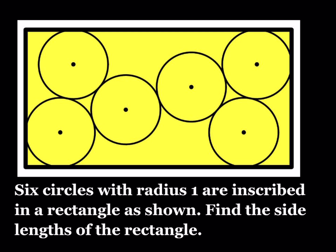So we have six circles with radius 1 inscribed in a rectangle as shown. Find the side lengths of the rectangle.